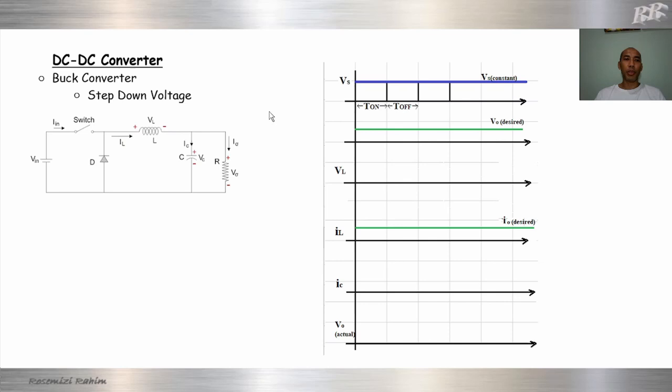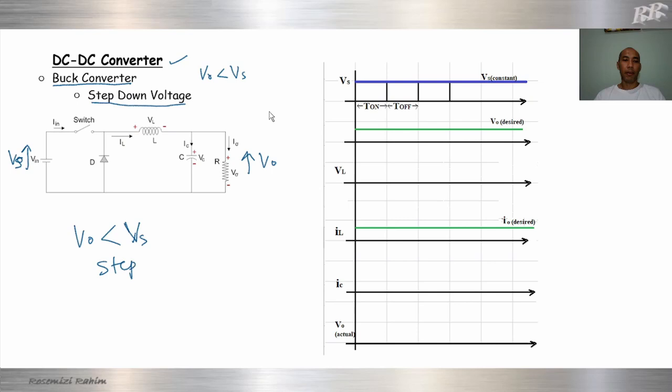Hello everyone. In this video I am going to discuss about DC to DC converters. The first type is Buck Converter, also known as Step Down Converter. It is used to step down the voltage, meaning that Vout will be less than Vs. This is called Step Down — step down the voltage.